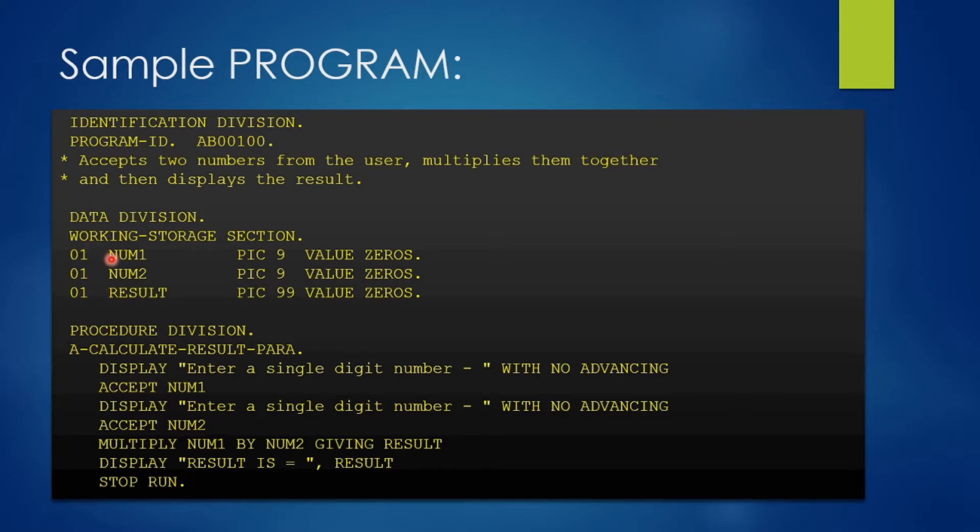The variable names are num1, num2 and result. Num1 and num2 are defined with pic 9 and we have initialized them with zeros. It is a good practice to initialize your variables before doing any kind of processing.